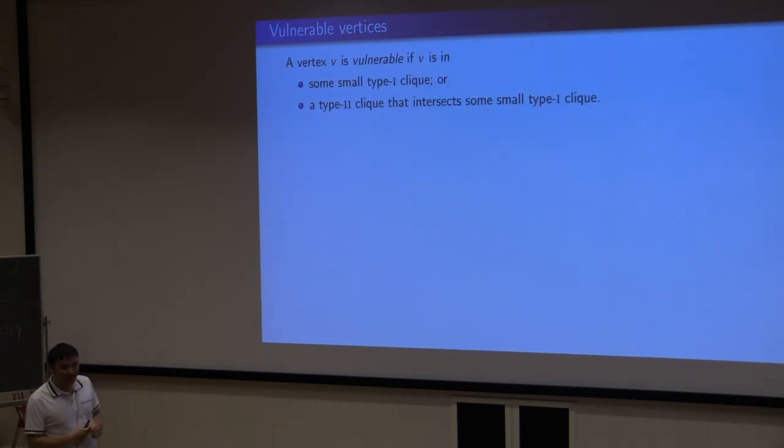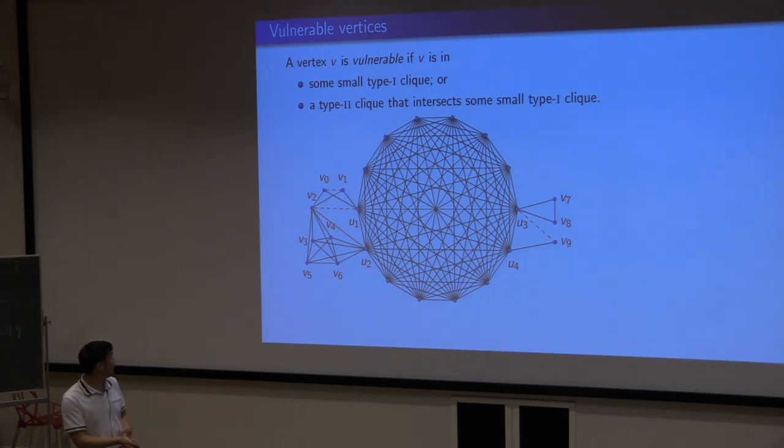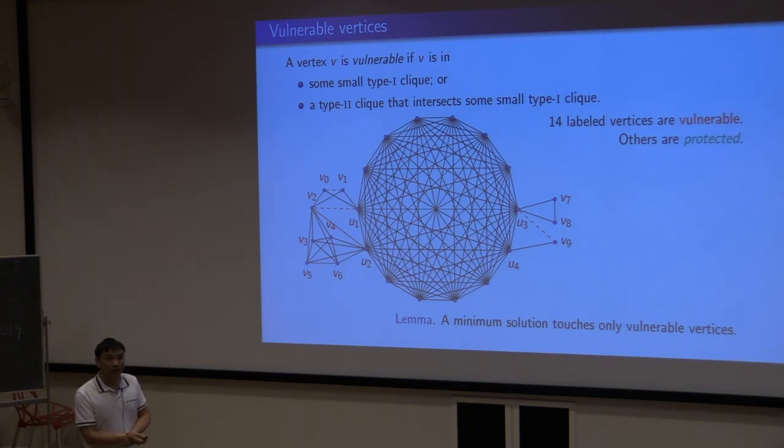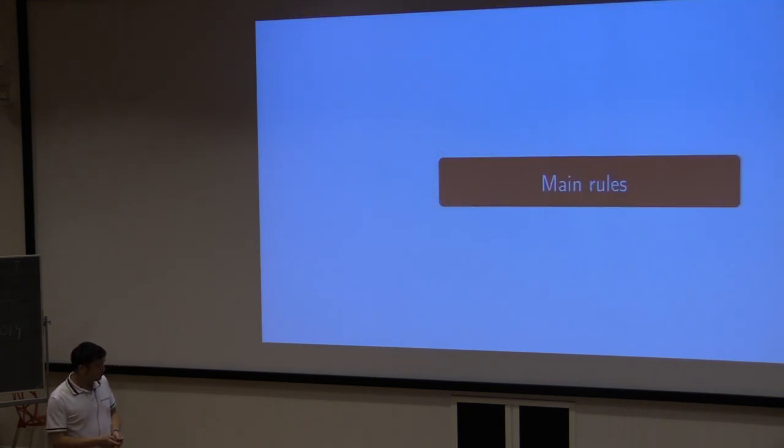Now we have the technical definition. We say vertex V is vulnerable if it's in some small bad clique, or in a clique that intersects a small bad clique. In this example, you can check that the 14 labeled vertices are vulnerable, and others are protected. The point is, a minimum solution never touches those protected vertices. It only plays with the vulnerable vertices. You can see from the four edges. But, of course, the trouble is, we are not allowed to just delete those protected vertices.